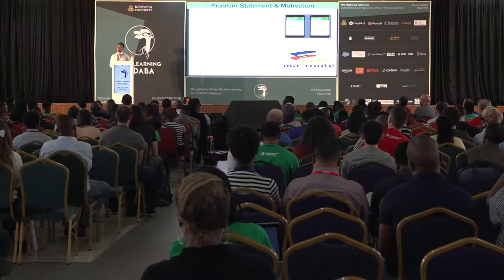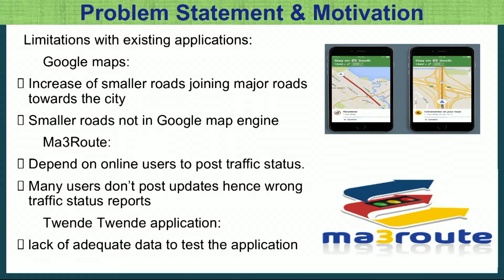What is the problem? What is the challenge? We have people who have done research or tried to come up with applications to solve the problem. We have Google Maps — someone can use it to predict road traffic — but the problem is we have so many smaller feeder roads joining the highways headed to the city. When new smaller roads are created, they are not updated to Google Maps instantly, so users are likely to be caught up in traffic and wrong predictions are likely to occur.